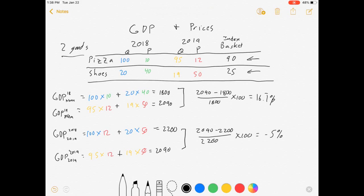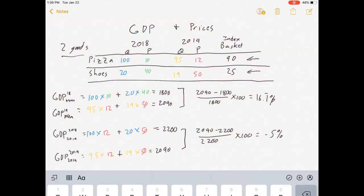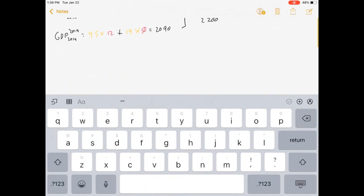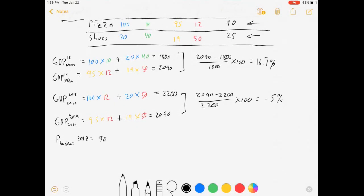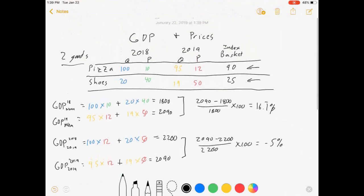Say for instance we want to keep our quantities fixed to this basket of 90 pizzas and 25 shoes. We can calculate how prices have changed. So we need to calculate the price of a basket. Let's use 2018 prices for this basket. That's 90 pizzas times the 2018 price plus 25 shoes times the 2018 price, equals $1900. So it cost us $1900 to buy that basket in 2018.